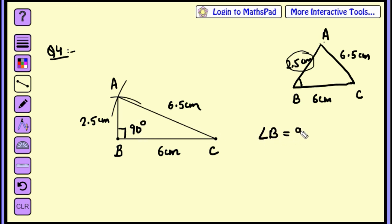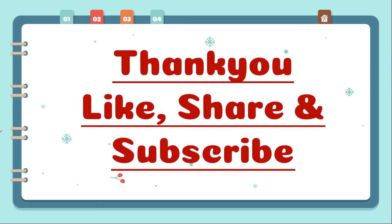So we can write angle B is 90 degrees. I hope you have understood the solution. Thank you for watching the video. If you like this video, please like it and share it. And subscribe to my channel. Don't forget to press the bell icon so that when I upload a new video, you will get a notification. So we'll see you next time. Bye students.